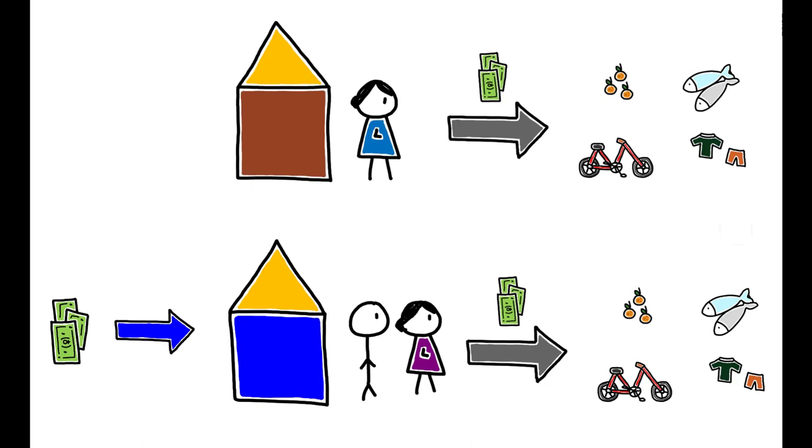Instead, higher consumption by non-recipients is driven by higher earned income. Thus, the chain of events is the following.